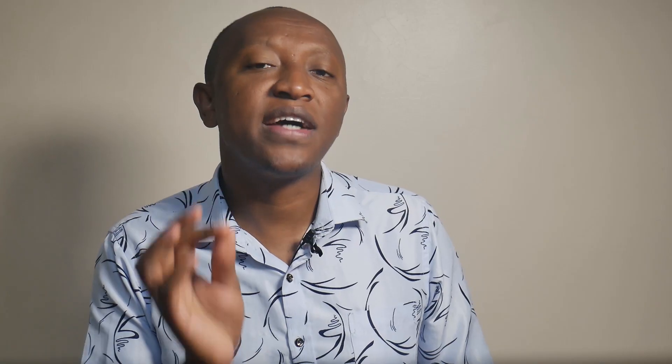Step one: have a clear research question. The first step to finding scholarly articles for your research paper is to have a clear research question. Having a clear research question can make it easy to find scholarly articles and begin writing your research paper.